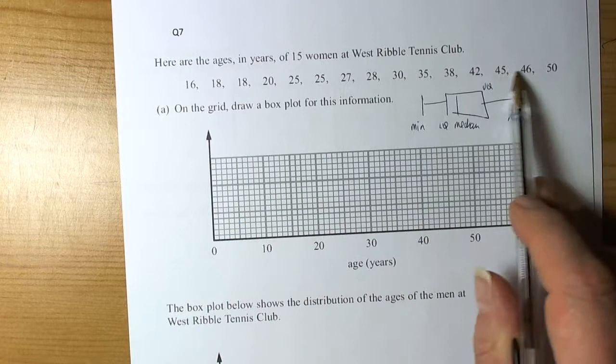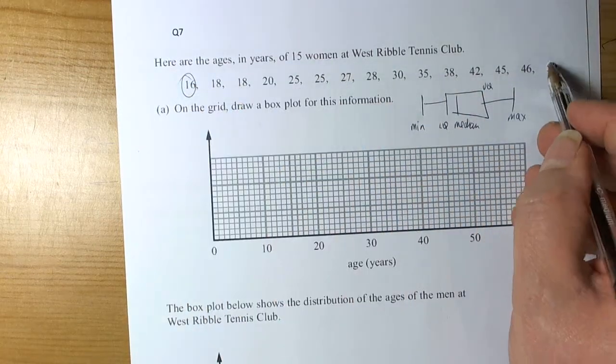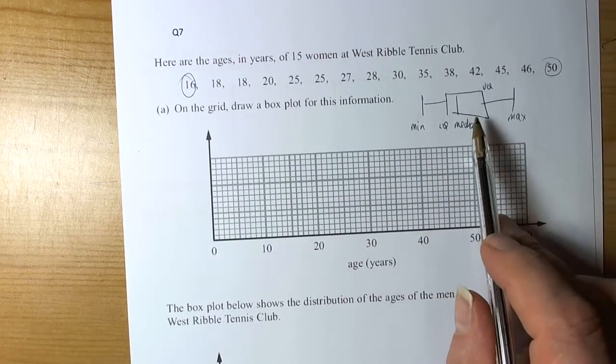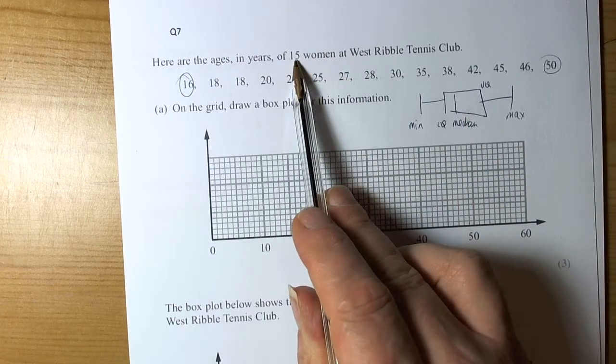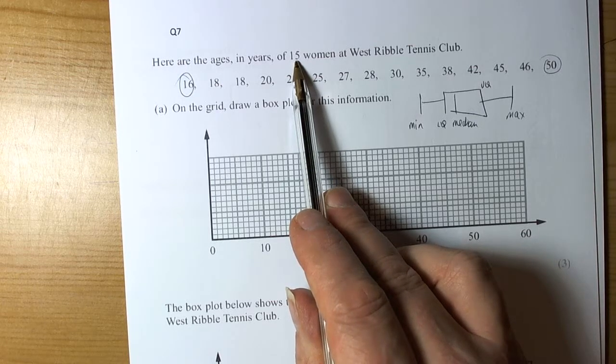So we've got a set of data here that we need to calculate those values for. Well, the minimum is obvious, the maximum is obvious because they're already in size order for us. The median, well there's 15 women, so if we add one to that 16 and a half at 8, so the 8th woman will be the middle one.